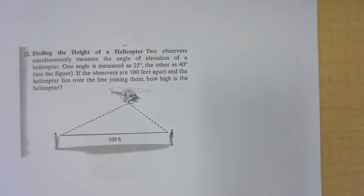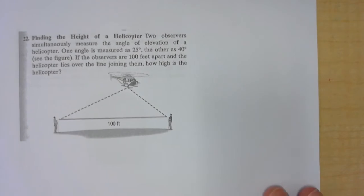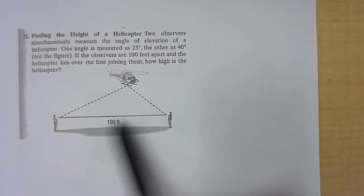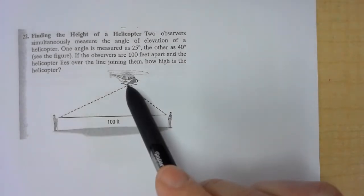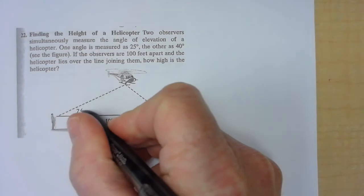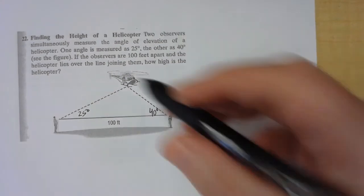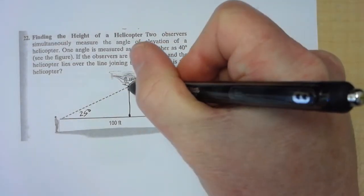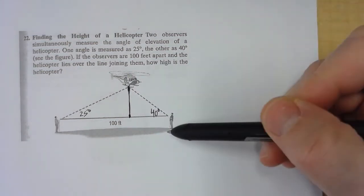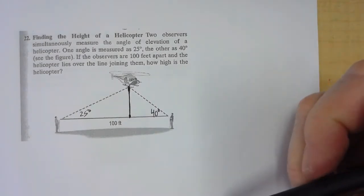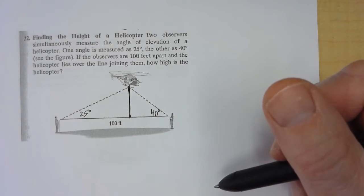The next one — we want to know how high up the helicopter is. There might be more than one way to do these problems, so if you do it slightly different than me, that's okay as long as you go through a process and get the correct answer. These two people are 100 feet apart, and there's a helicopter above. It forms an angle of 25 degrees looking up at the helicopter from one person, and 40 degrees from the other.